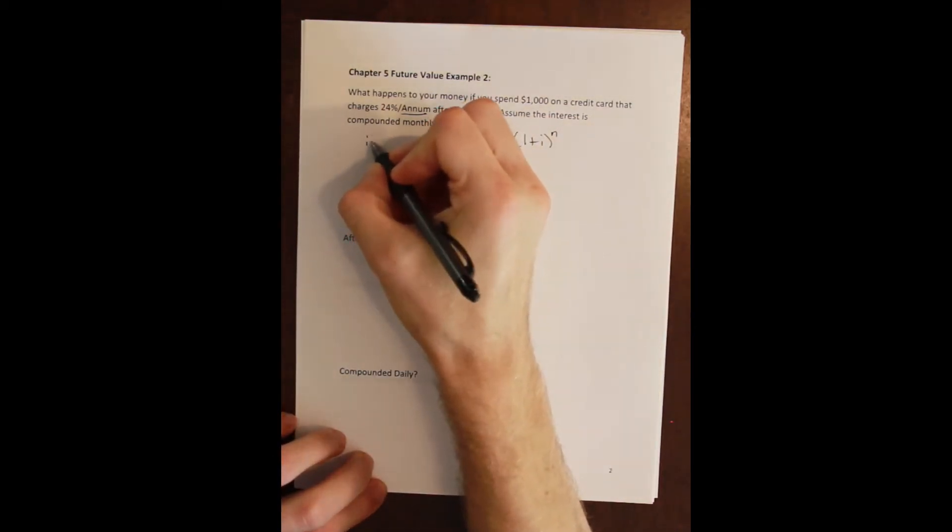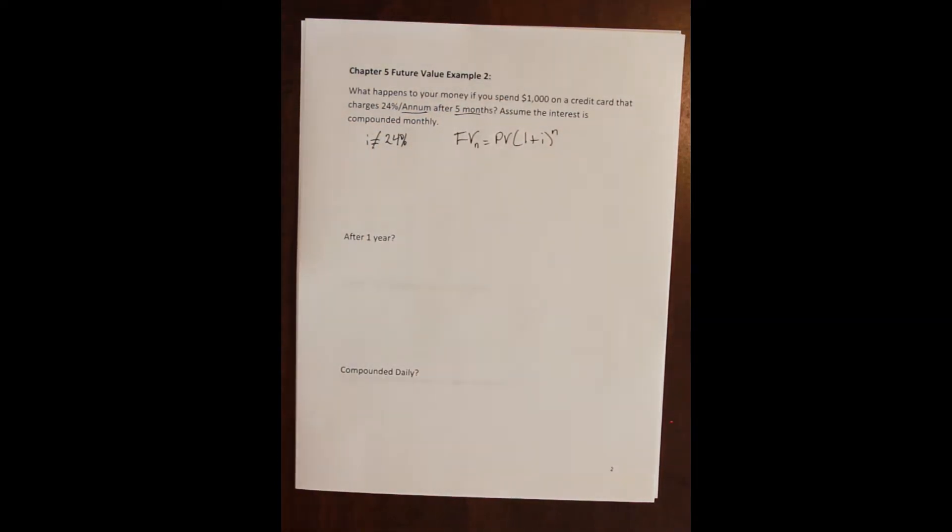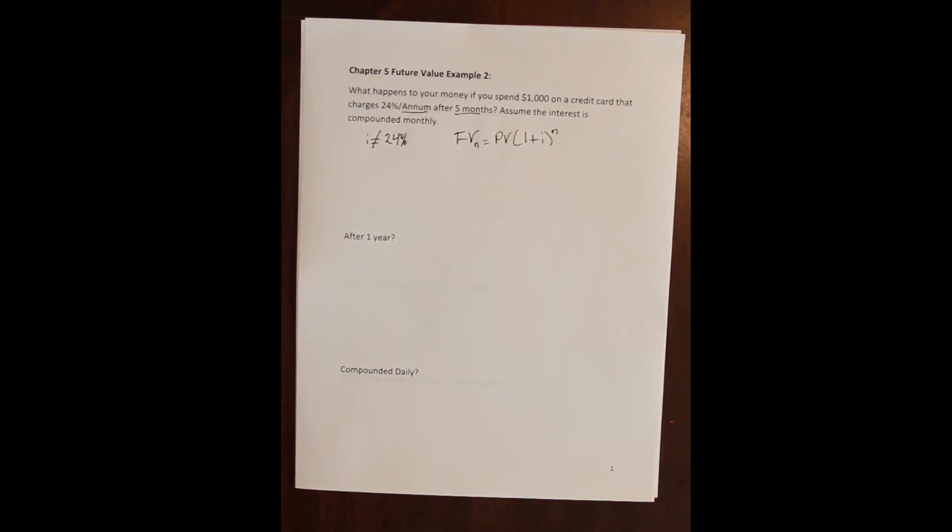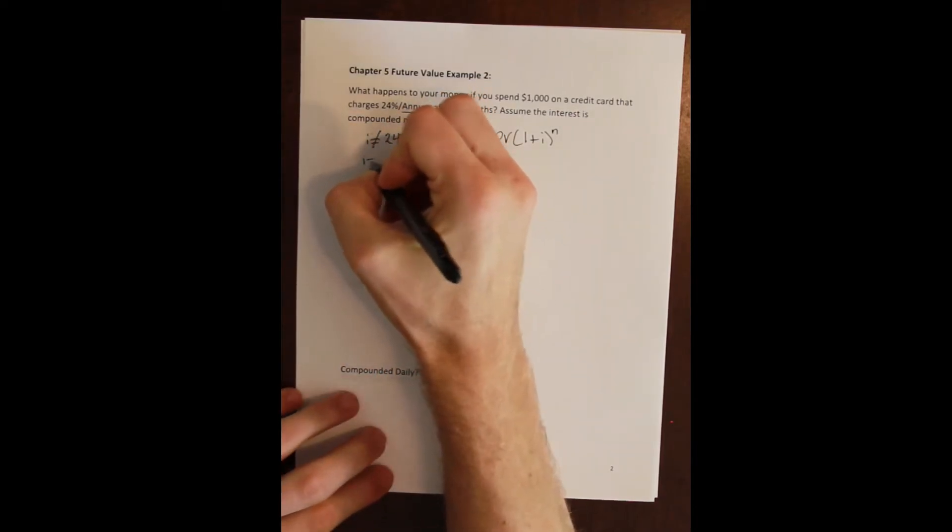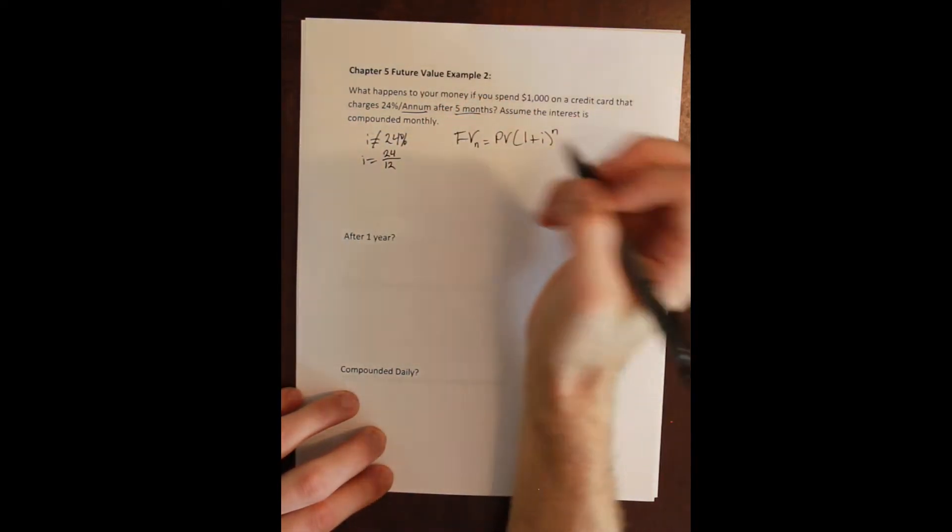And what we're running up against here in this contract is that we're given an annual rate but told that the rate compounds monthly, which means that i here is not 24%, that is the annual rate. We need to figure out what the monthly rate is. And the monthly rate is calculated by dividing the annual rate by the number of months in a year.